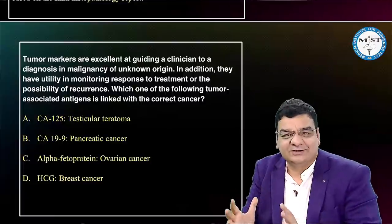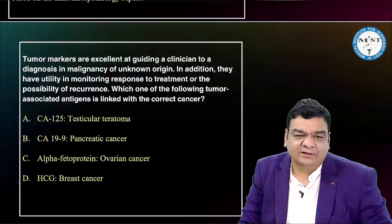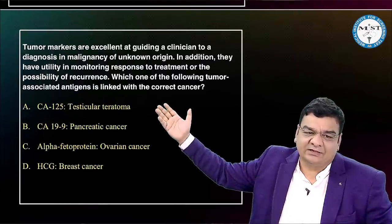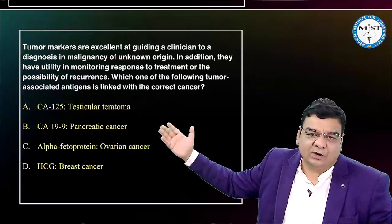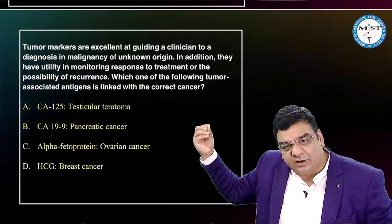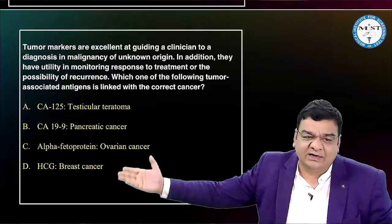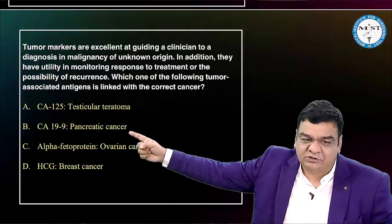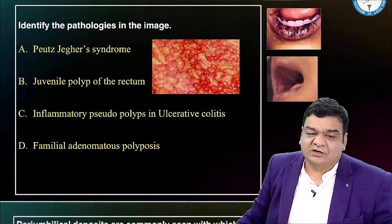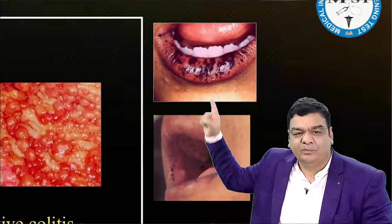There may be a question integrating pathology with surgery on tumor markers. CA-125 for ovarian cancer, CA-19-9 for pancreatic and gallbladder cancers, alpha-fetoprotein for hepatocellular carcinoma and testicular yolk sac tumors, HCG for choriocarcinomas. Among the options, CA-19-9 for pancreatic cancer holds true, others in the question may be false. Also, image-based questions may test familial adenomatous polyposis or Peutz-Jeghers syndrome — do not miss those images.